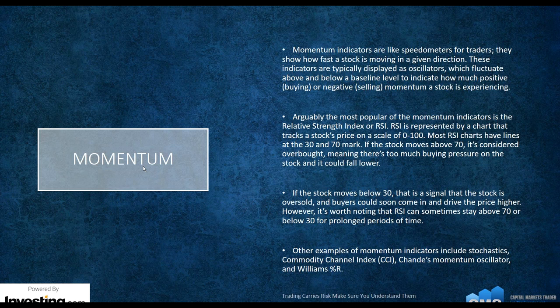Then we go to momentum indicators, which are like speedometers for traders — they show how fast a stock is moving in a given direction. These indicators are typically displayed as oscillators, which fluctuate above and below a baseline to determine how much positive or negative momentum an asset is experiencing. Arguably the most popular is RSI, or Relative Strength Index, which tracks a stock price on a scale of 0 to 100. Most RSI charts have lines at 30 and 70. RSI charts fall in an area called 'bounded,' as do stochastics.